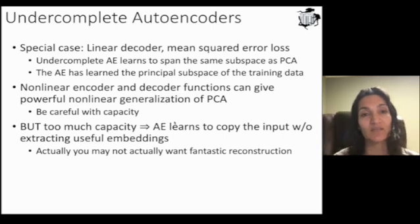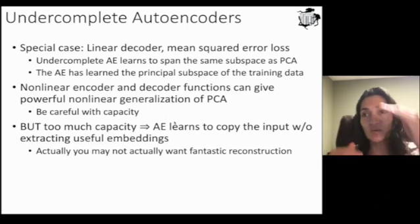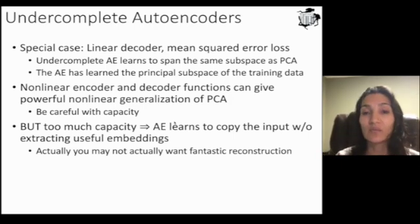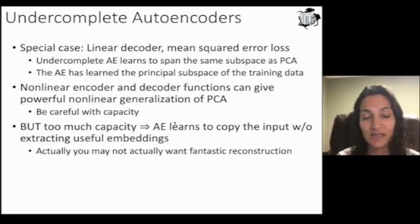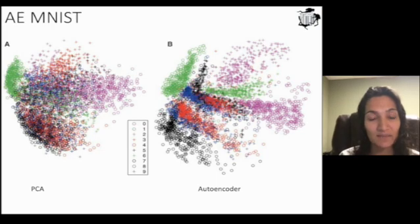But one thing you have to be careful of when designing an autoencoder is giving it too much capacity. If you don't bottleneck enough, the input can basically be copied to the output, and we wouldn't want that. That would result in a fantastic reconstruction, but the embedding layer isn't learning anything meaningful or reducing the dimensionality. So in fact, you may not want a fantastic reconstruction, which might seem counterintuitive, but the reconstruction error is there to combine with other losses, which we'll see in a second.